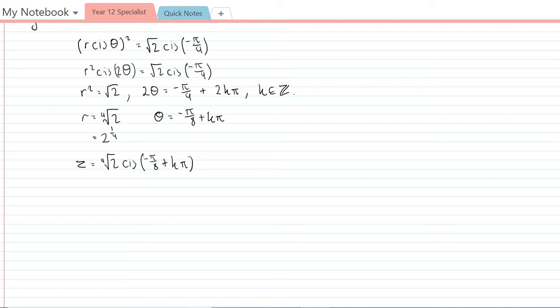So again I'll start making substitutions. So when k equals 0 I get z equals fourth root of 2 cis negative pi on 8. So there's the first solution.